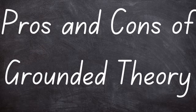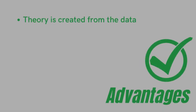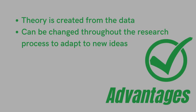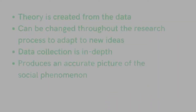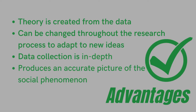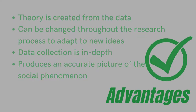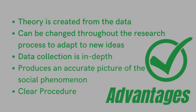There are some definite reasons that researchers would choose to use grounded theory methodology in their studies, but there are also some drawbacks to consider as well. One of the greatest advantages of grounded theory is that the theory is authenticated by being grounded in the data. Due to the cyclical nature of constant reflection and revision, grounded theory allows the researcher to adapt to new revelations and directions that the data takes the research. Because of the constant revisions and narrowing towards a theory, research data is quite in-depth, and an accurate picture of what really is going on in the social phenomenon is produced. There is a clear set of steps for researchers to follow throughout the process.